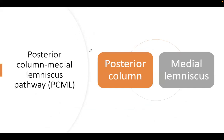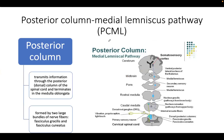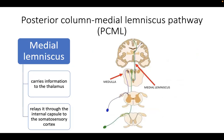The posterior column medial lemniscus pathway is divided into the posterior column and the medial lemniscus. The posterior columns transmit information from the dorsal columns of the spinal cord and terminate in the medulla oblongata, forming two large bundles: the fasciculus cuneatus and the fasciculus gracilis. The medial lemniscus, on the other hand, is responsible for carrying sensory information to the thalamus.